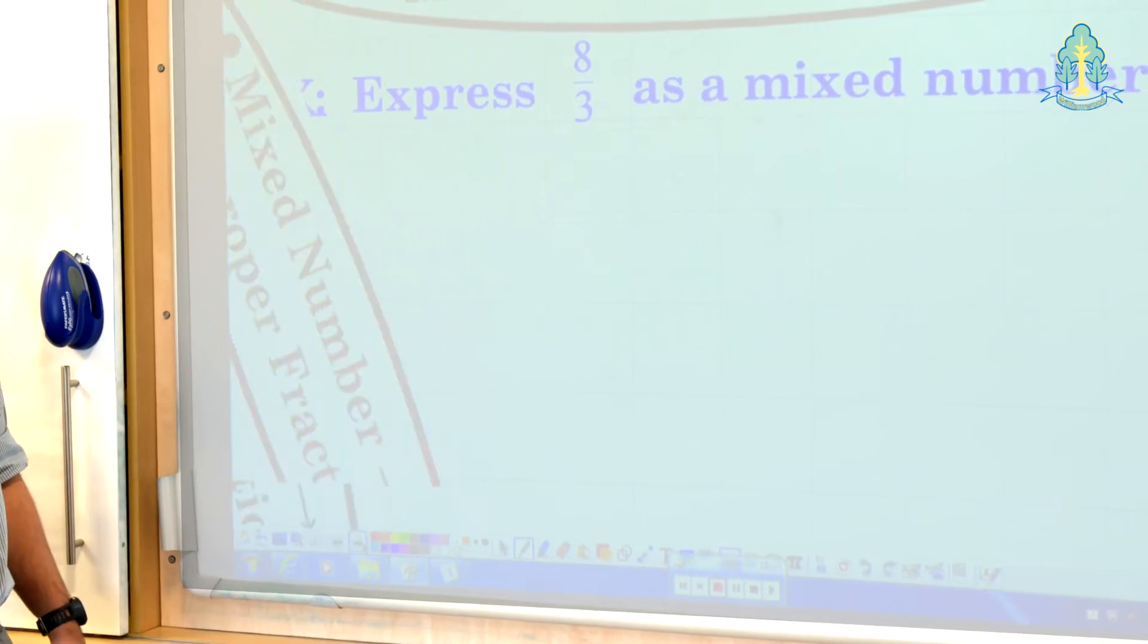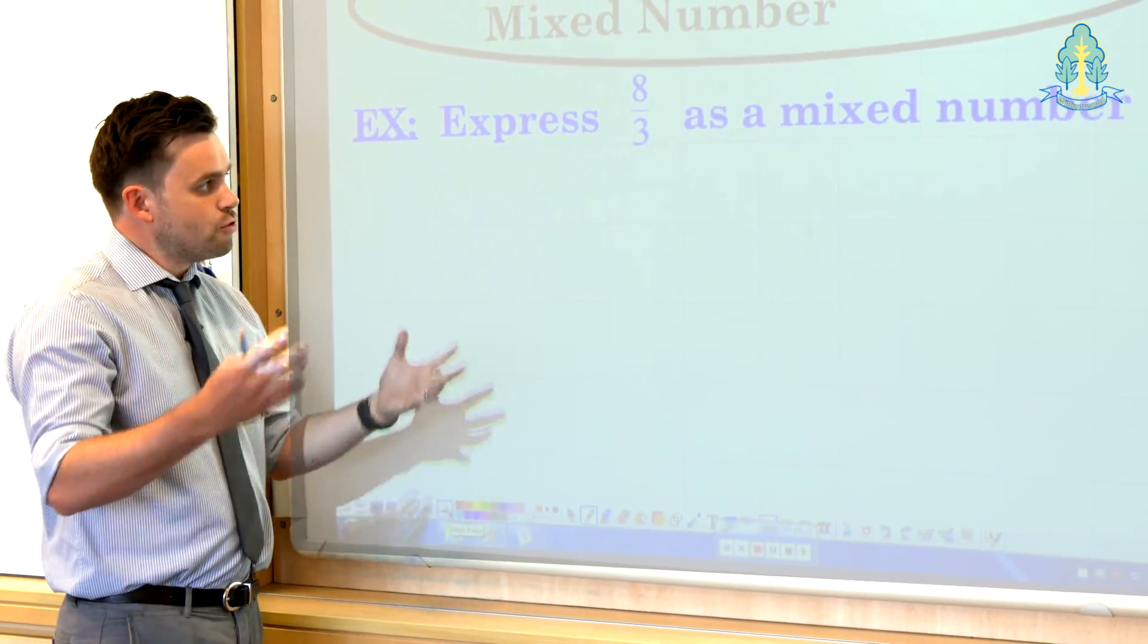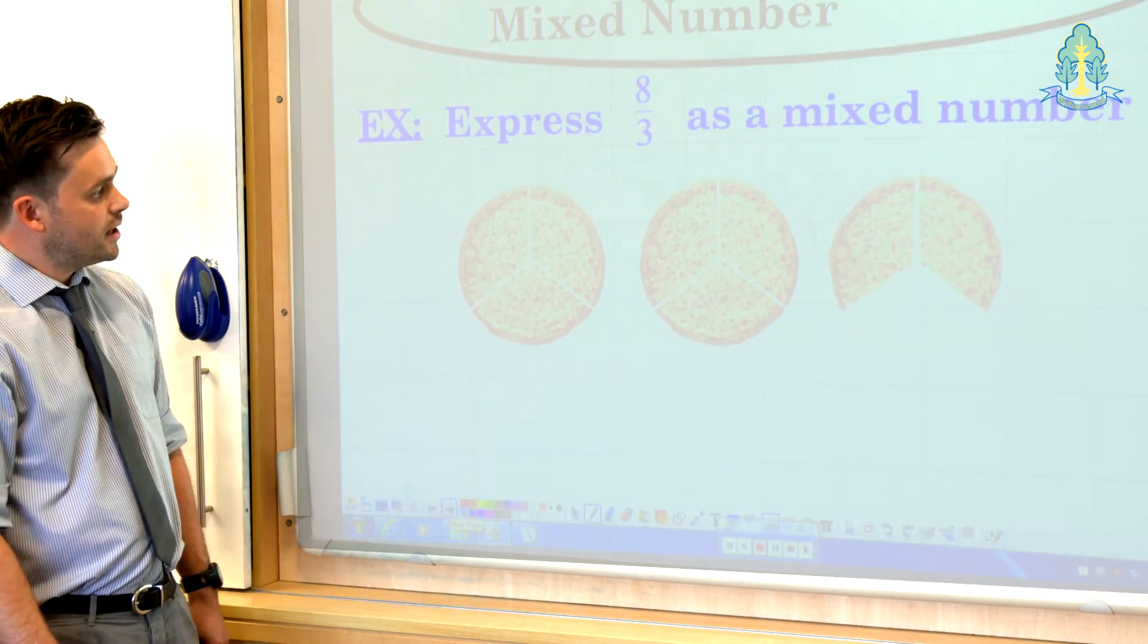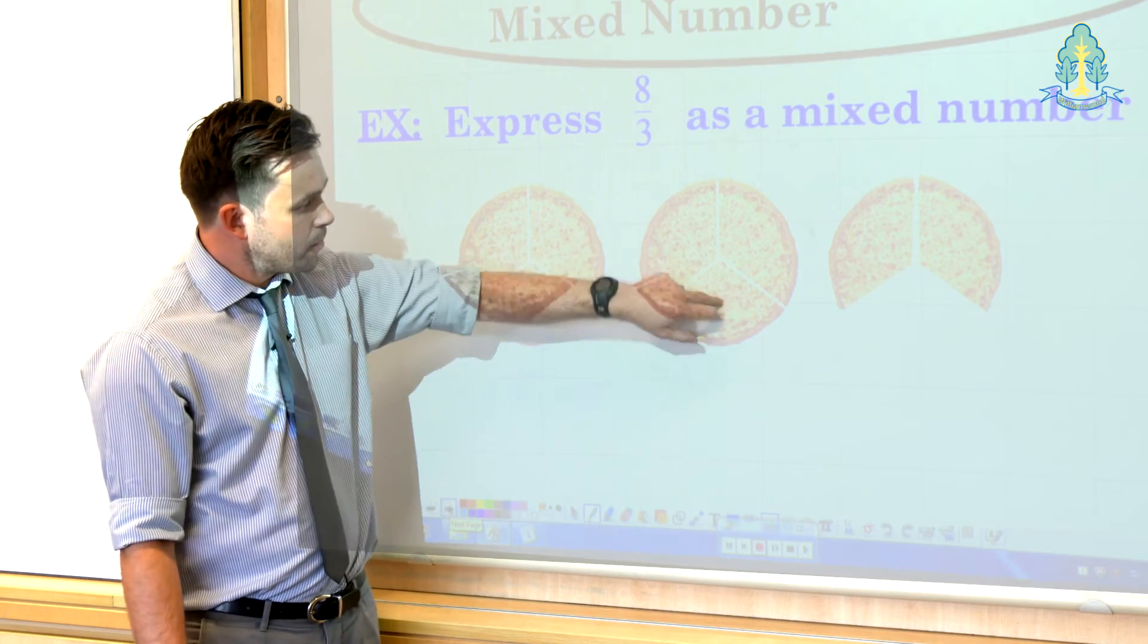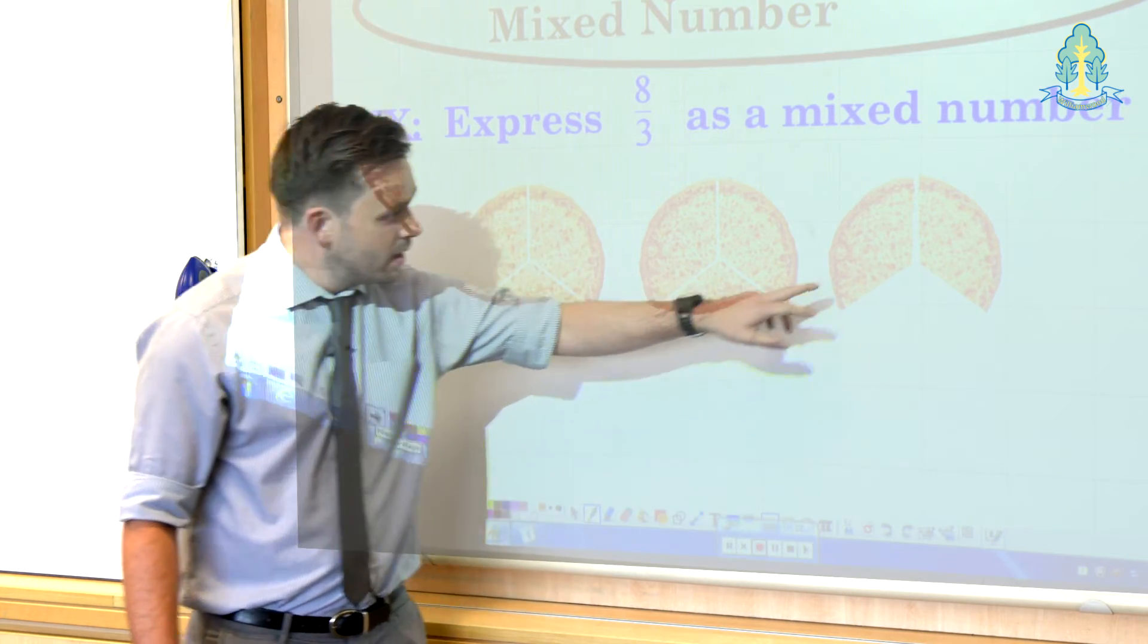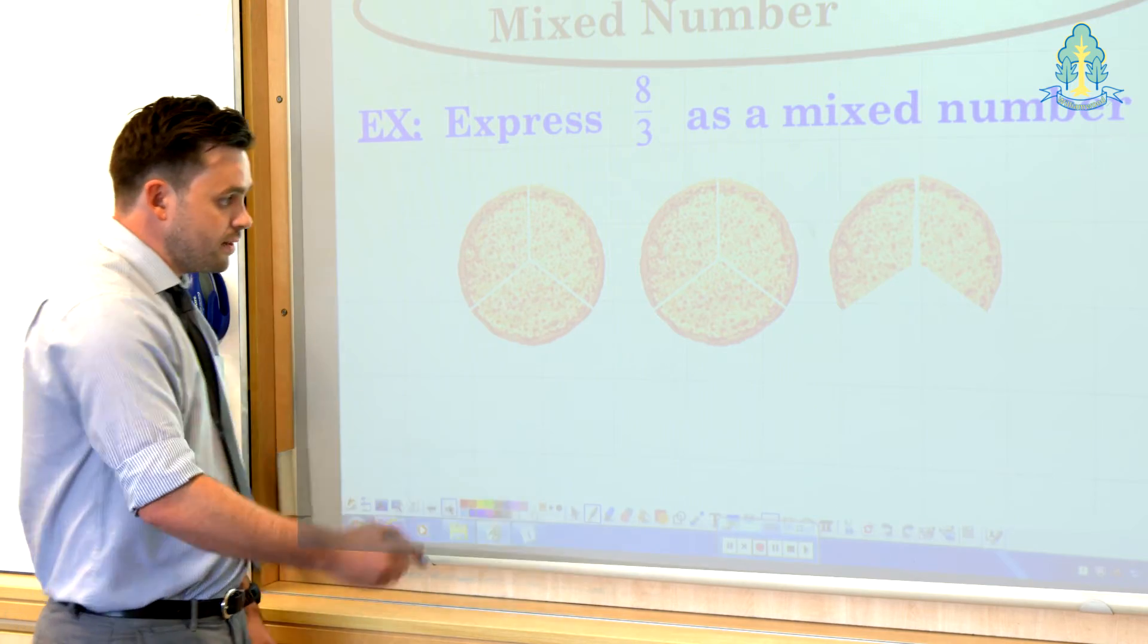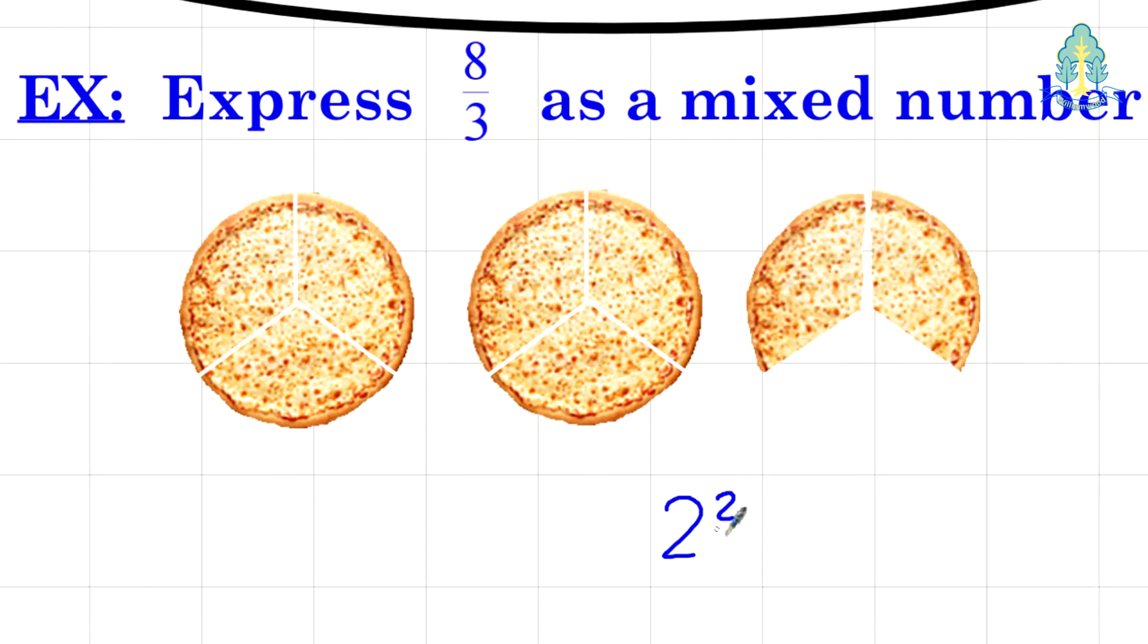Now going the other way, from an improper fraction to a mixed number, again we can introduce it with a visual representation. In this case 8 thirds, if we were to draw out our pizza slices again and count them all up, with 1, 2, 3 thirds to create the first whole number. Another 3 thirds creates another whole number and we would have two extras in this case. So as a mixed number, visually, the pupils should be able to see that 8 thirds can be written as 2 and 2 thirds.